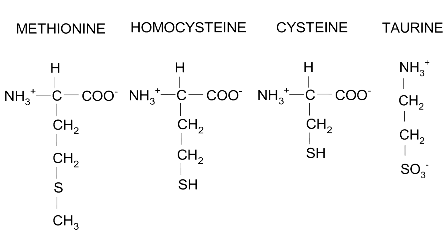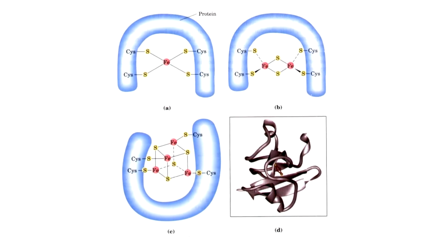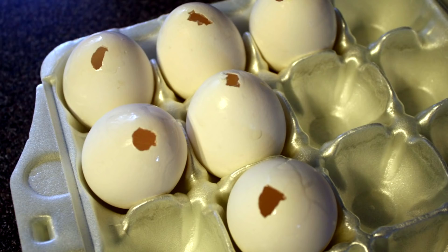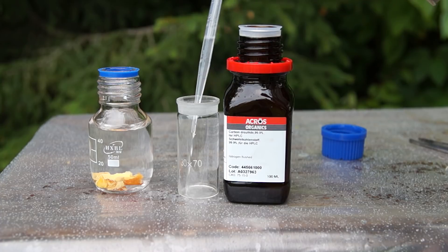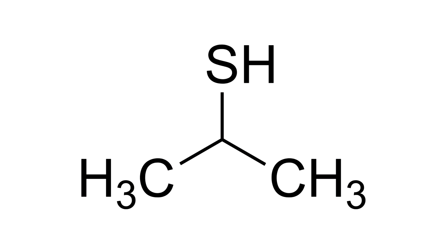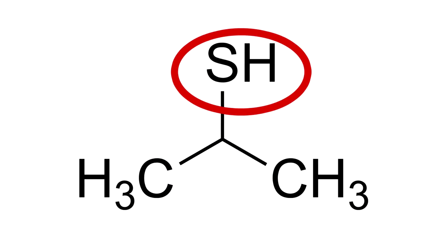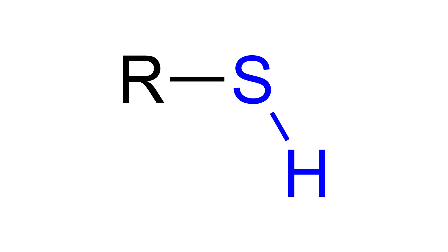Now let's talk about the most interesting and sometimes entertaining aspect: the smell of substances containing sulfur. Sulfur is part of some amino acids which form proteins found in living organisms. Everyone has felt the smell of rotten eggs at some point — it is caused by hydrogen sulfide, which in small quantities is released from decaying proteins inside eggs. Generally, all organic substances containing sulfur have a certain odor.